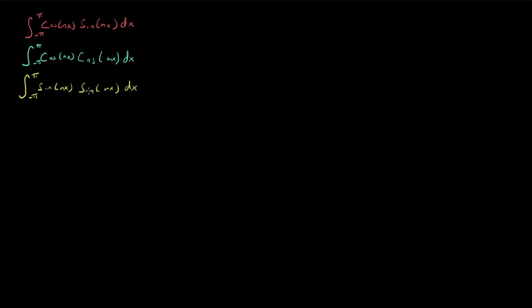In this video, I'm going to be looking at the orthogonality properties of trig functions. What that means is that I'm going to be evaluating these three integrals — every combination of sine and cosine, so cosine nx, cosine mx, over the interval minus pi to pi. I'm going to be doing each of these three integrals in three different ways, using a different technique for each one. Let's get started.